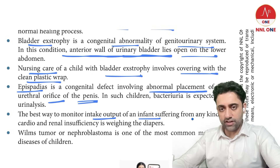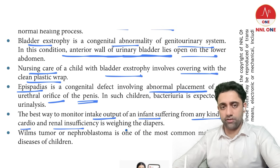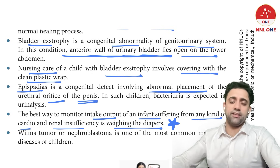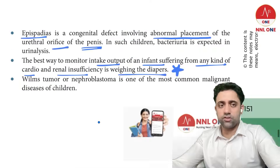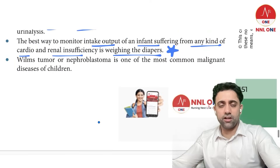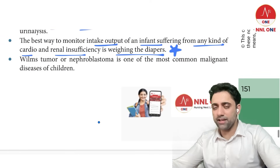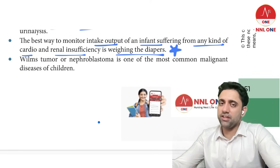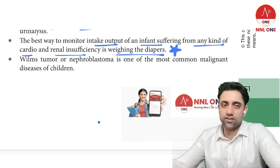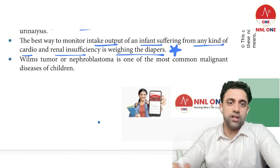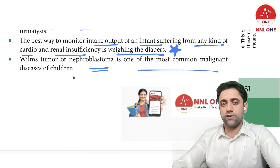The best way to monitor intake and output in an infant with cardiac or renal insufficiency is by weighing the diapers. This is useful because a sick baby may not allow catheterization and cannot communicate urine output.